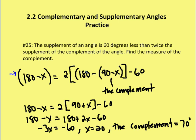When we write the supplement of the complement: the complement is 90 minus x, and the supplement of that complement is 180 minus (90 minus x). So the full equation becomes: 180 minus x equals two times the supplement of the complement of the angle, less 60 degrees. Now we can figure out what x is.